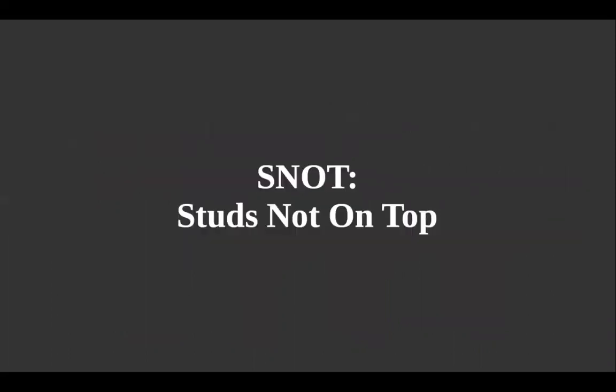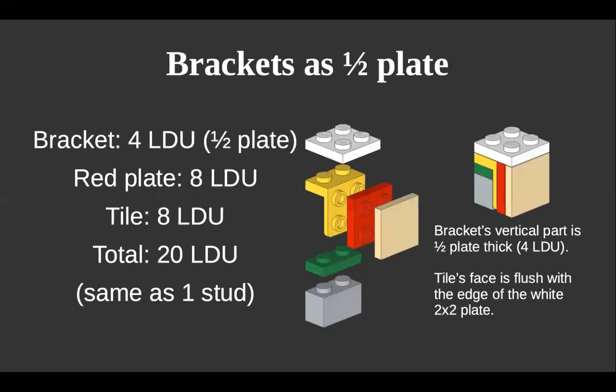Let's talk about studs not on top. The brackets we've seen — for example, this yellow one — make up for the missing half-plate thickness in our wall, so we can have the front face of a tile flush. If you have one of the printed tiles from a Day de los Muertos display and you want it flush in your wall, you do this, and that way the printing is right flush with the face of the wall.